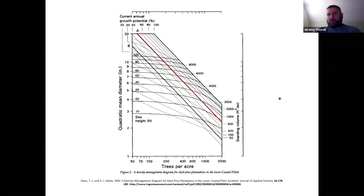Remember what this diagram is doing. It's displaying the size density relationship for slash pine on the lower coastal plain. You can only have so many trees of a certain size per acre. To the left of this red line, that's biologically possible on this particular stand we're looking at.